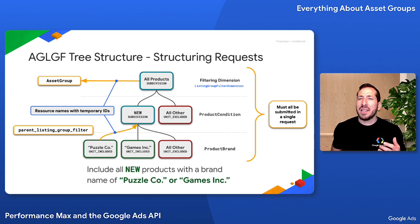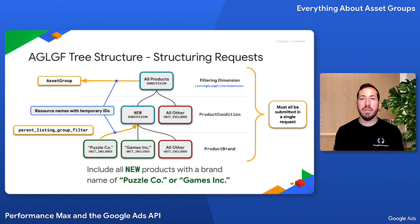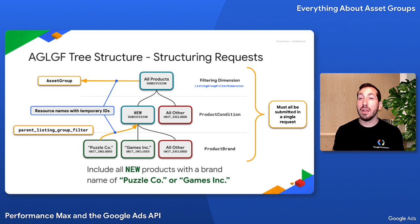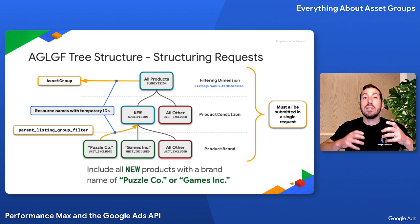What's interesting about Asset Group Listing Group filters as compared with other product partition trees in the Google Ads API is that with other use cases, you may set a non-binary value on a tree node. For example, you can use unique bids in different nodes of the tree. However, Performance Max automates bidding using Google AI, so all you have to specify is whether the leaf nodes are unit included or unit excluded.